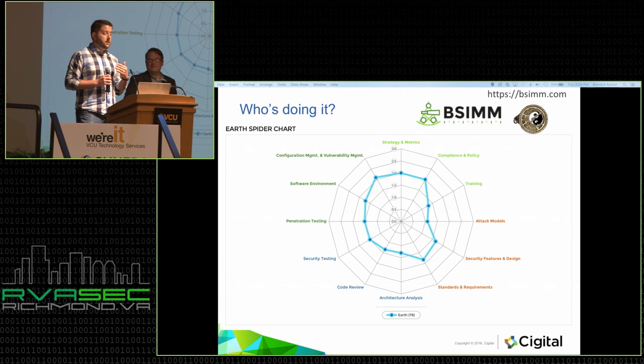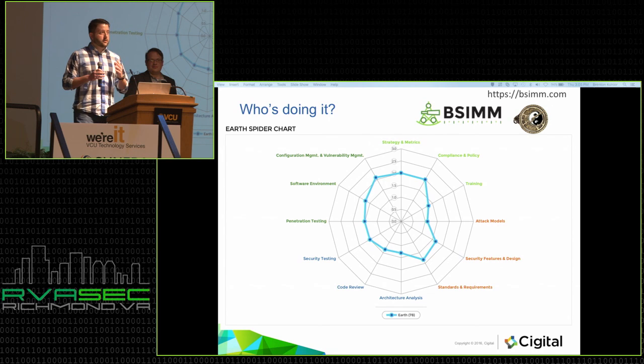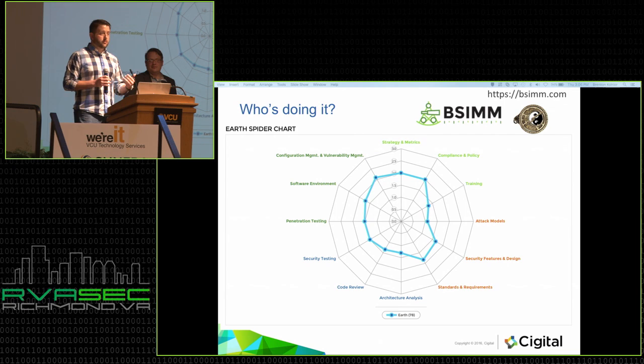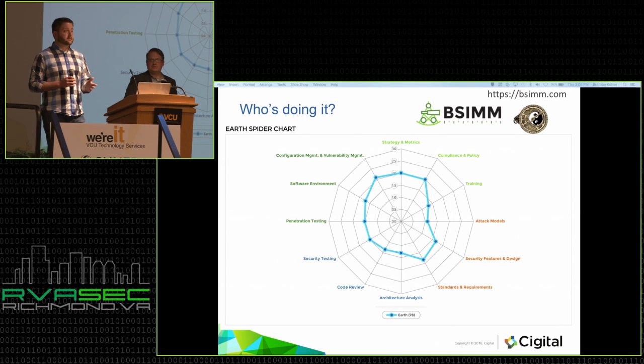It's a model we established around 2008, when the industry was starting to tell people how they should do things in a very prescriptive way. We took a step back and decided to actually look at companies to see what they're really doing, come up with data around it, and build a model off of what's actually happening in the industry. We had good relationships with banks and tech firms and studied their organizations. Through that study over the past six or seven years, we're up to BSIMM 6 now, and we've been able to watch for trends in this data.